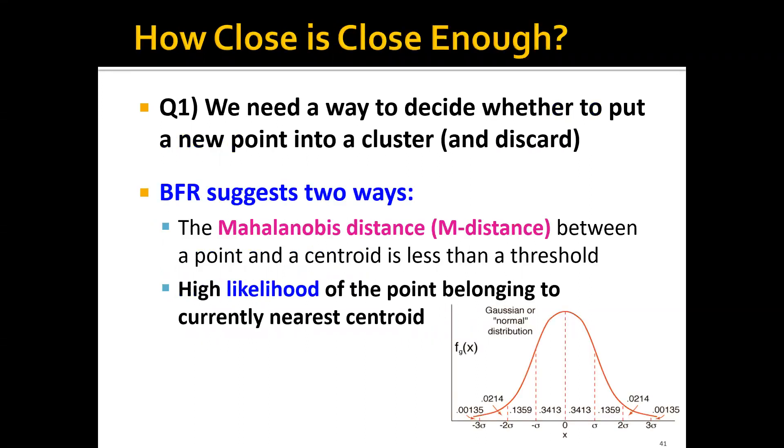For the first question, we need a way to decide whether to put a new point into a cluster and discard it. BFR algorithm suggests two ways. The first option is we can compute the Mahalanobis distance, or M-distance, between a point and a centroid. If the M-distance is less than the threshold, that means they're close enough, and we can put this new point into the cluster. The second option is we can calculate the likelihood of the point belonging to the current nearest centroid. This is because we assume they are normally distributed, so we can calculate the likelihood inside this Gaussian distribution, or normal distribution. If the likelihood is high, we can put this new point into the cluster.